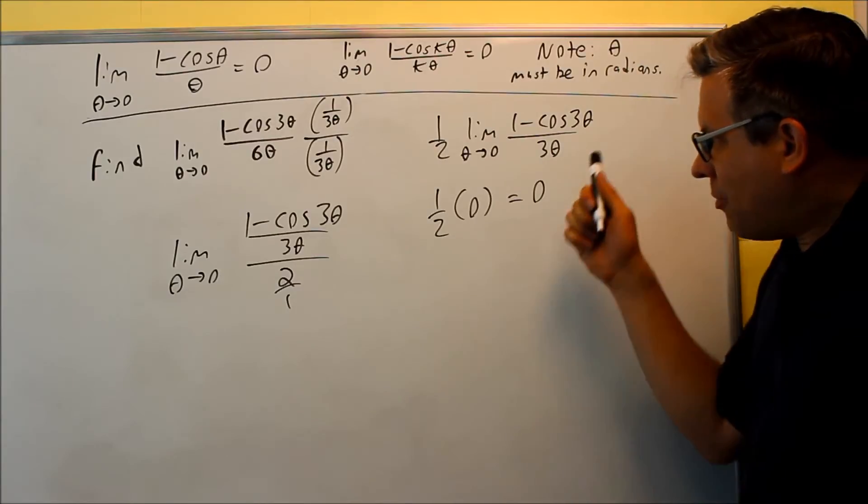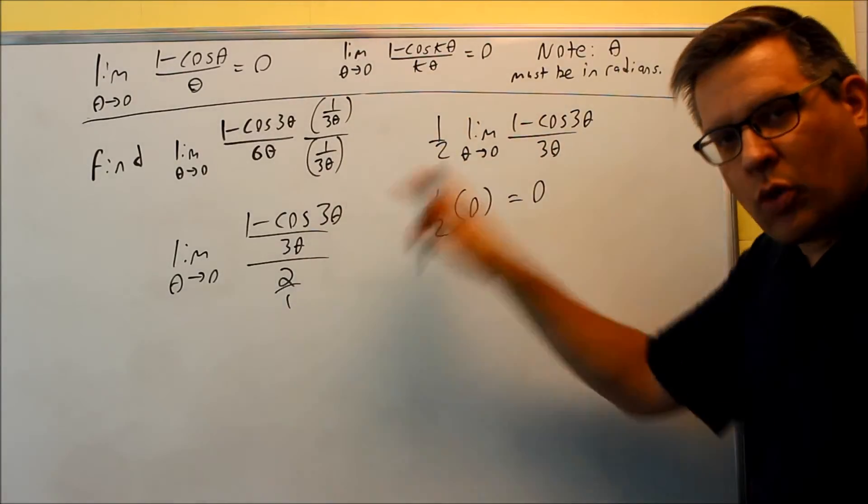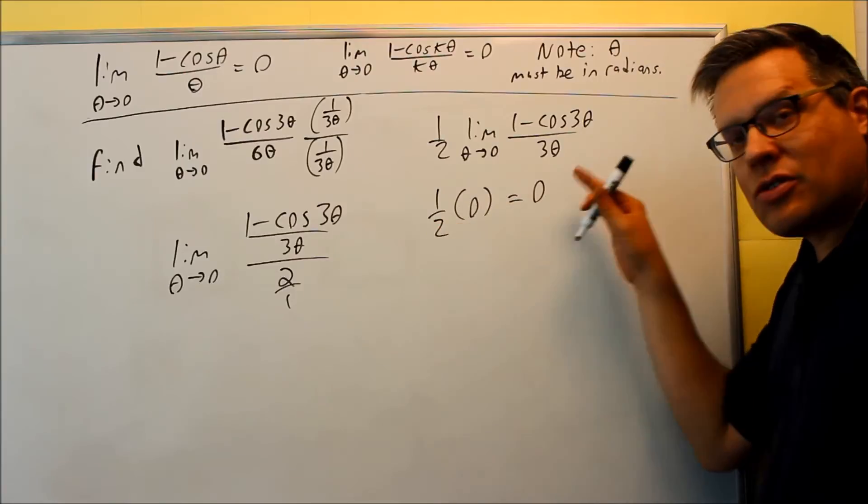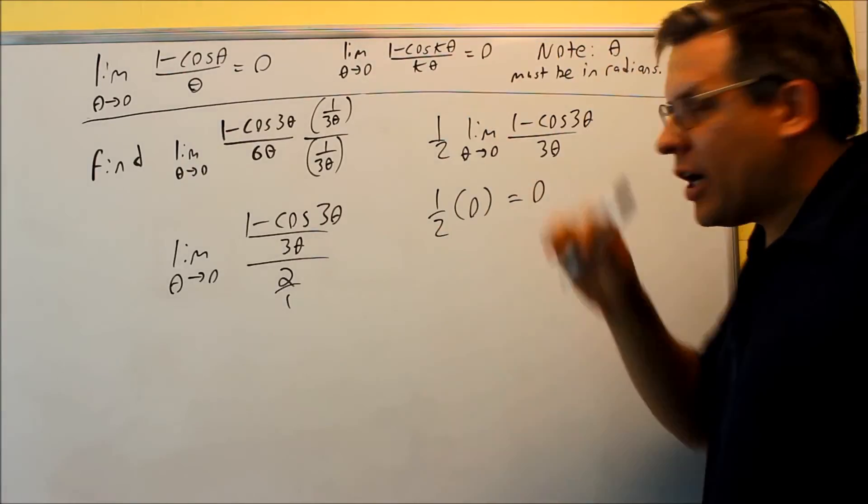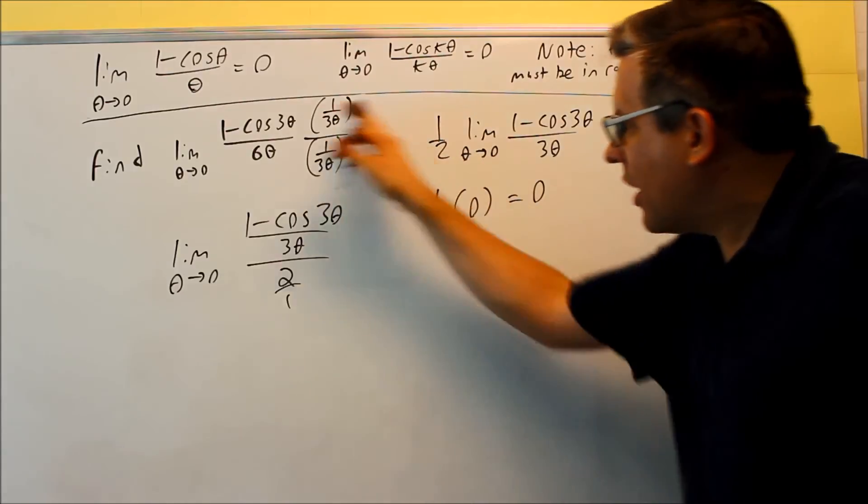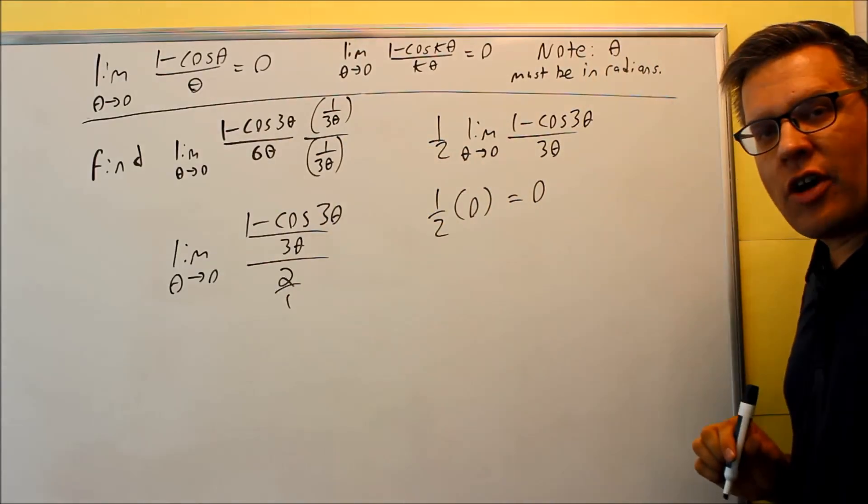So, again, I don't want to just go ahead and put equal zero down. I have to show some work showing how I can manipulate it to equal zero by applying the special properties and the limit rules. So, I did that here. Again, zero is the final answer.